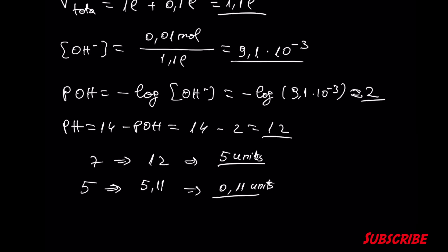In terms of buffer effectiveness, by general agreement we have pH = pKa ± 1. This is the accepted interval of pH change for buffer solutions. Of course, there are exceptions — for example, the pH range that exists in our blood. Thanks for watching guys, see you in the next video. Peace.